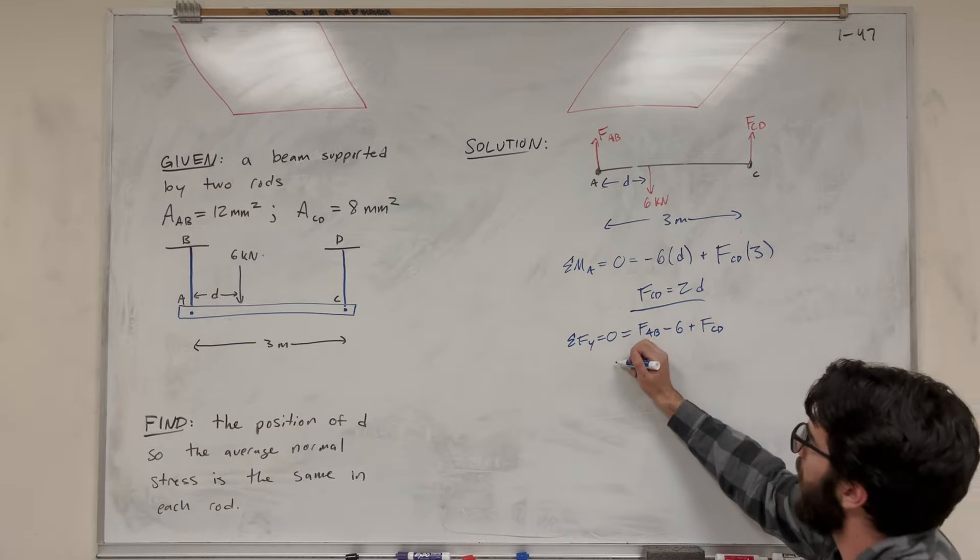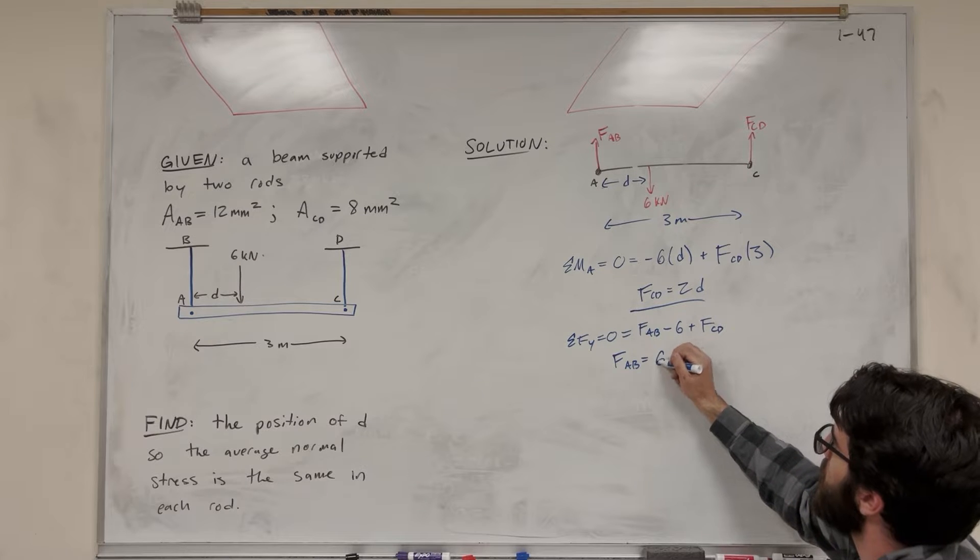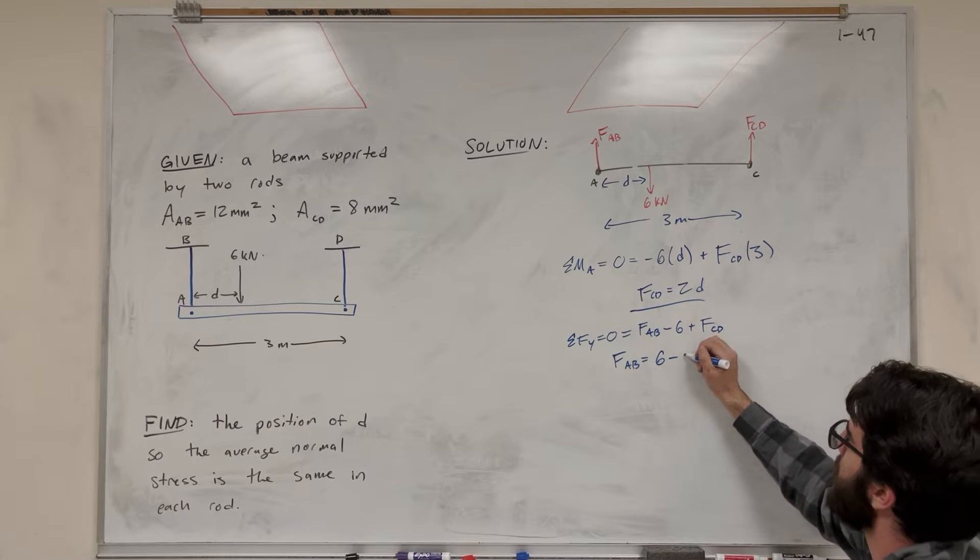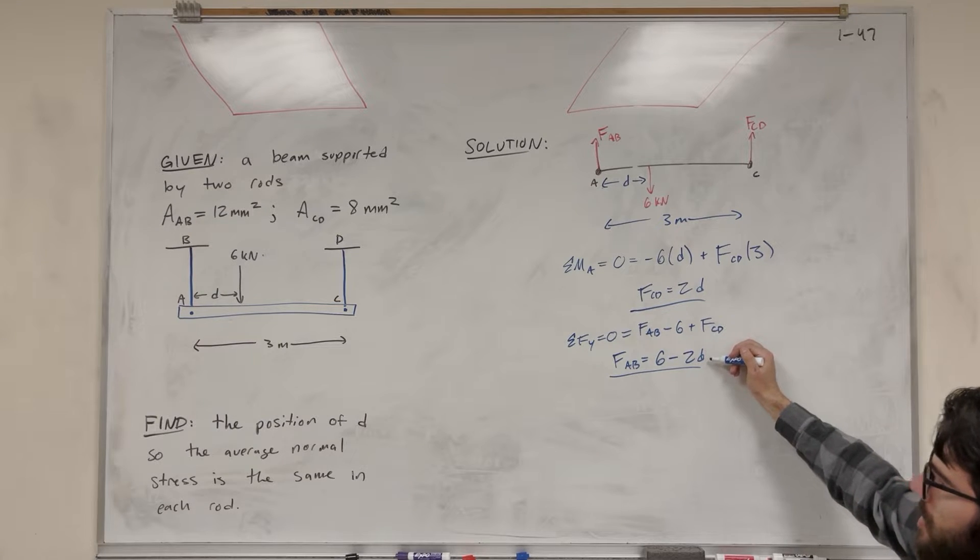So let's move force AB to the other side, where you get force AB is equal to positive 6, but it's going to be minus force CD, which is going to be minus 2D. So now we have force CD and force AB in terms of D.